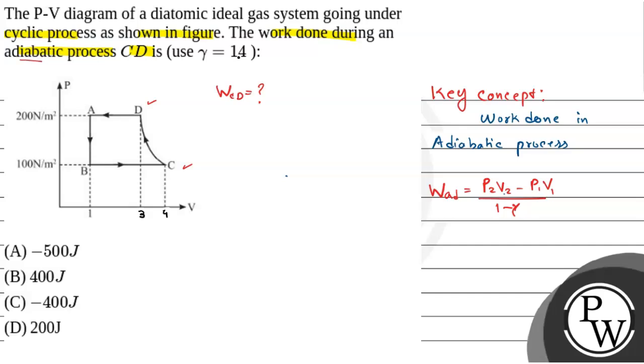Now come on, the problem is given. The problem is that the graph is written. Pressure at D is equals to 200 N per meter square, and pressure at C is equals to 100 N per meter square.